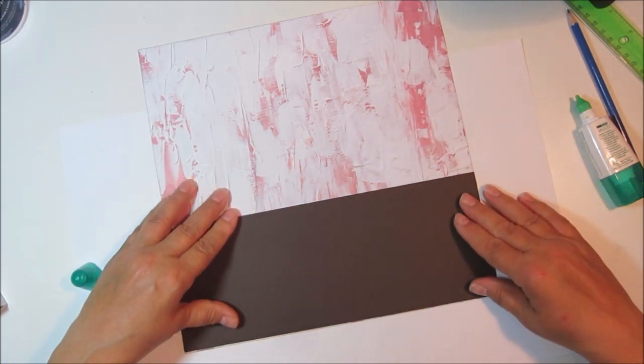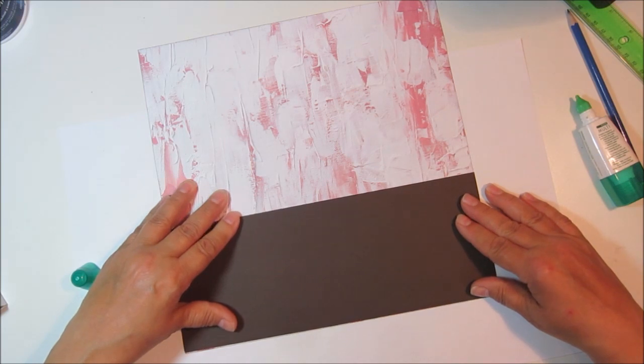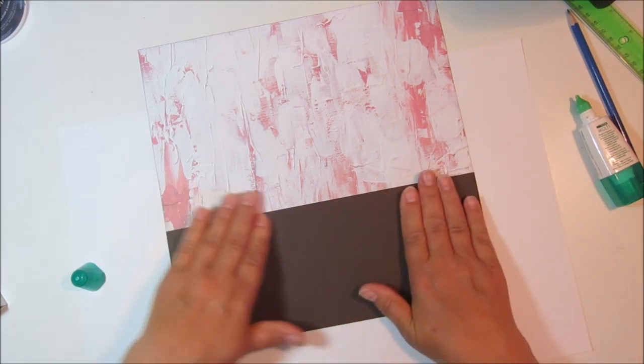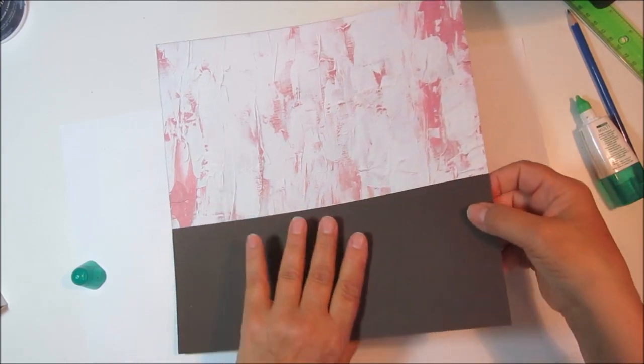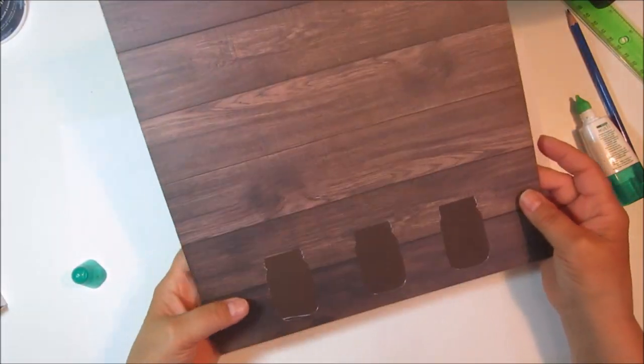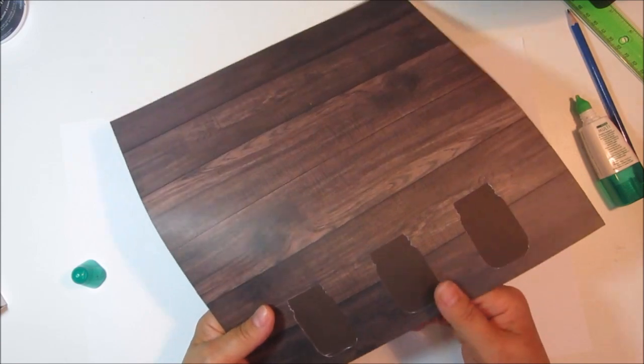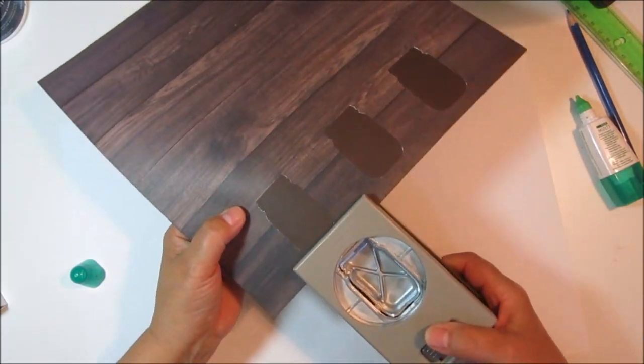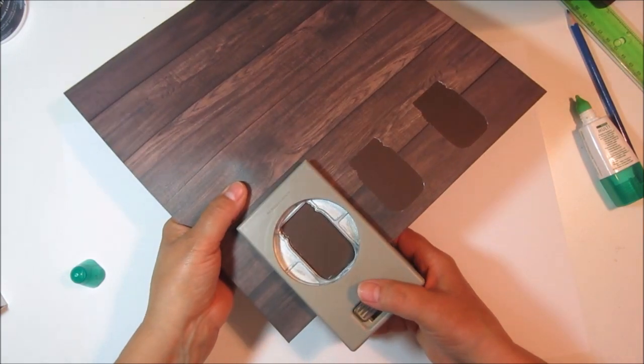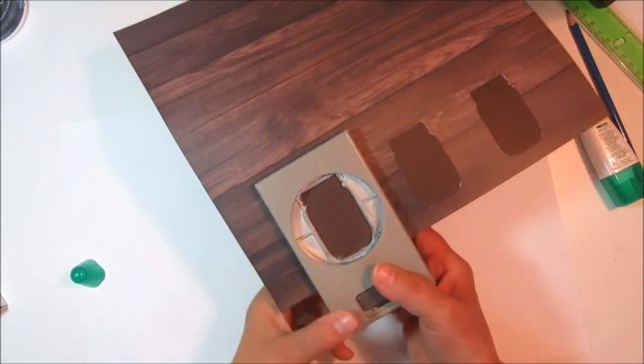And then I'll just do around the outside. I use Tombow for everything so you can use your favorite adhesive and glue that on there. This just made it a little bit more sturdy. Then what I did is I just kind of lined it up with my punch and I punched those holes in the same spot again.